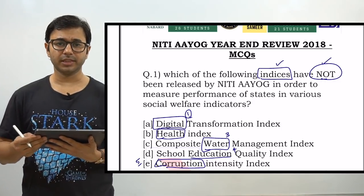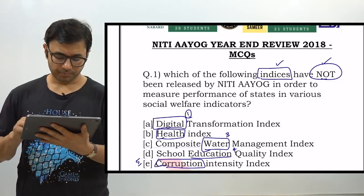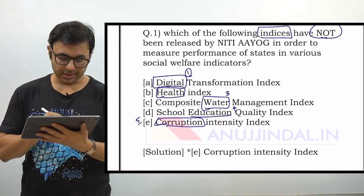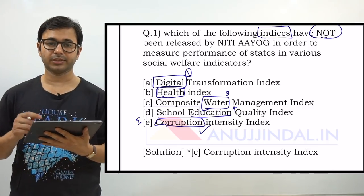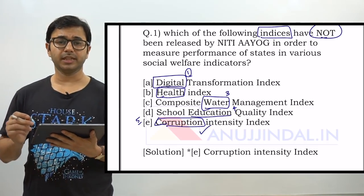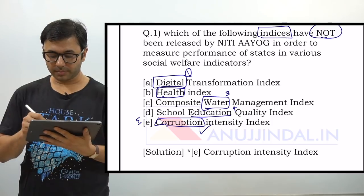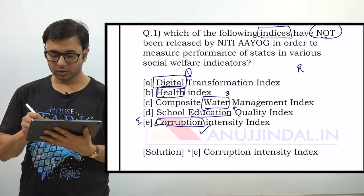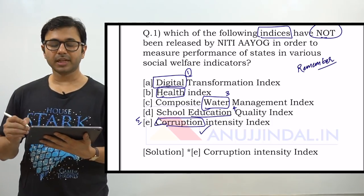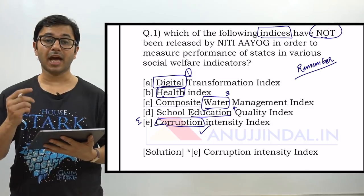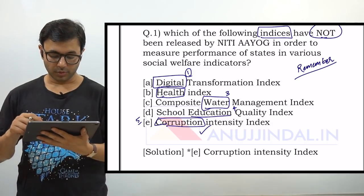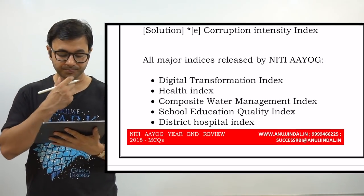The answer to this question is E — Corruption Intensity Index. A very factual question indeed. The important point here is to know and remember all major indices that have been released by Niti Aayog. Let's have a look at all the major indices.